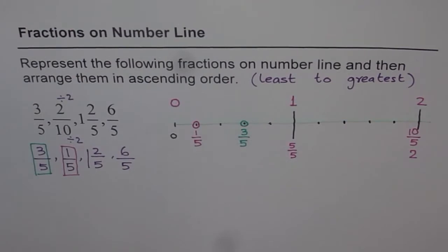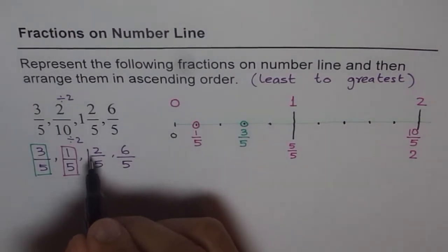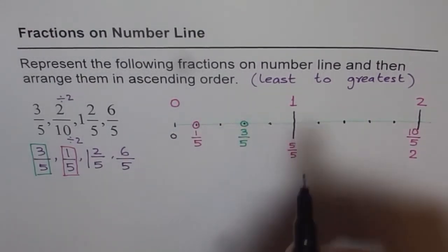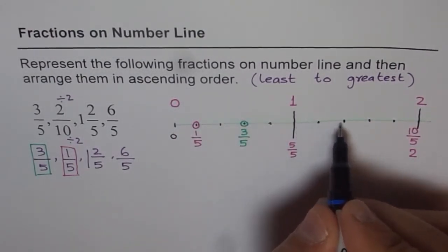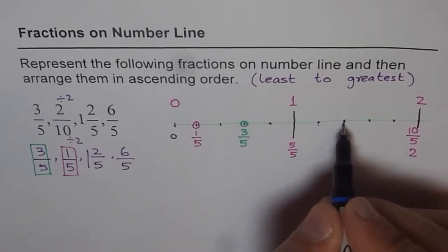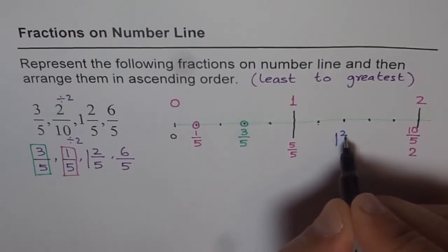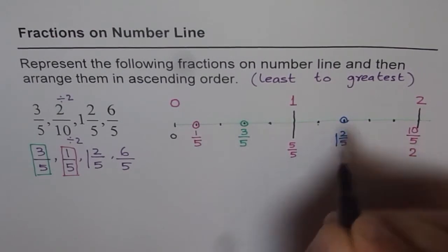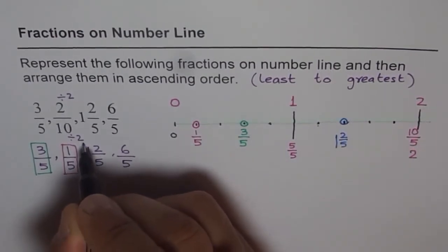Now how about 1 whole and then 2 fifths. 1 whole and 2 fifths. That means 1 whole and then 2 fifths. First and second. Do you understand? Each division is 1 fifth. Second one is 2 fifths. So that is 1 whole and 2 fifths. So that is our next number. So that is also done for us.